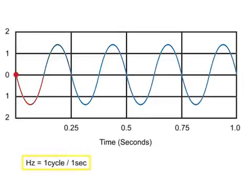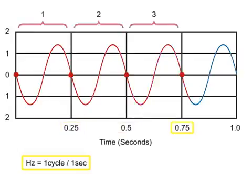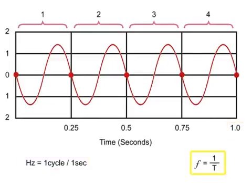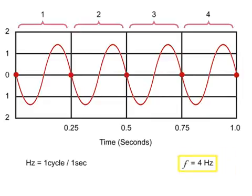The unit of measurement of wave frequency is called Hertz. A Hertz is equal to the number of wave cycles occurring in one second. For this wave, there are four cycles in one second. Given that frequency is one over T, or period, the frequency is four cycles in one second, or four Hertz.